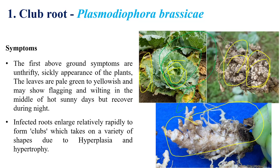Plasmodiophora brassicae causes a very important disease in crucifers. This disease was first discovered by Woronin, a Russian scientist, in 1876.